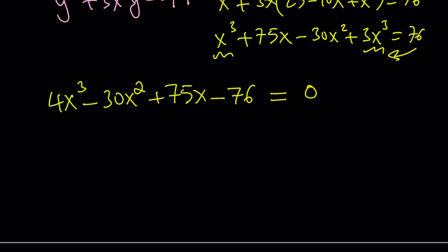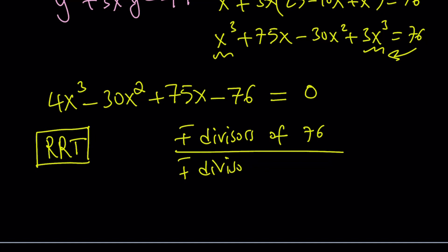What is RRT? RRT is the Rational Root Theorem. So it basically tells us if there are rational roots, then those are going to be of the form of the divisors of the constant term, which is 76. Of course, there's a plus minus sign divided by plus minus divisors of the coefficient of x cubed, which is 4.